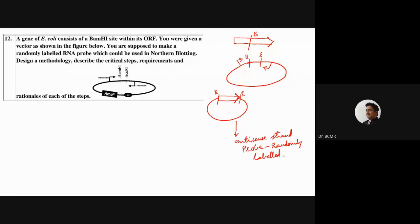The objective is to use it as a probe that is randomly labeled. The problem is that the gene has a BamH1 site within its open reading frame, so it gets difficult to clone it in a directional way. The question is how can one generate a DNA fragment that has a BamH1 overhang on one side and an EcoR1 overhang on the other.